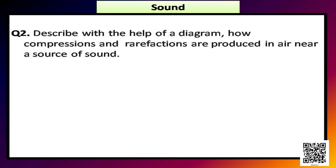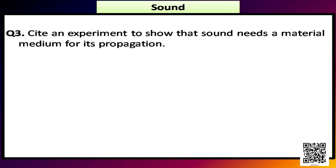Question 2 says describe with the help of a diagram how compressions and refractions are produced in air near a source of sound. We have already discussed with the diagram and hope you have clearly understood the concept. So hope you can find the answer by yourself. Question 3 says that cite an experiment to show that sound needs a material medium for its propagation. In our previous classes we have already discussed this experiment. So hope you can find the answer for this question.